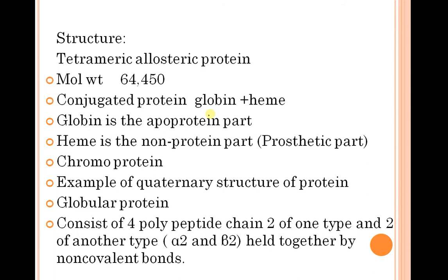What are the structures of hemoglobin? It has a tetrameric structure with a molecular weight of 64,000. Hemoglobin is a conjugated protein: heme plus globin. Heme is the non-protein part and globin is the protein part, making it a conjugated protein.